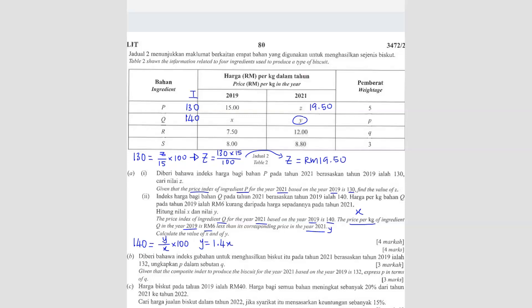The second equation: the price per kg of ingredient Q, X, will be equal to 6 ringgit less than Y. So X equals Y minus 6. This is the first equation and this is the second equation. Substituting the first into the second: X equals to 1.4X minus 6.